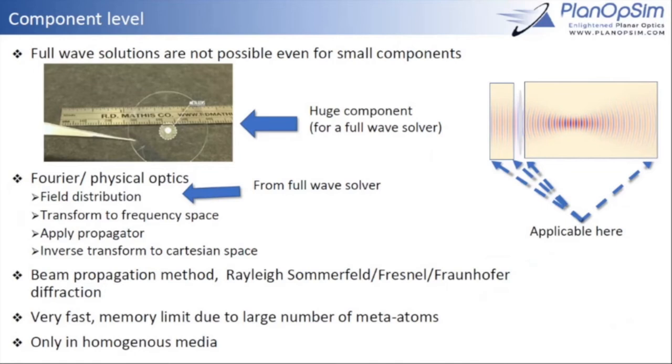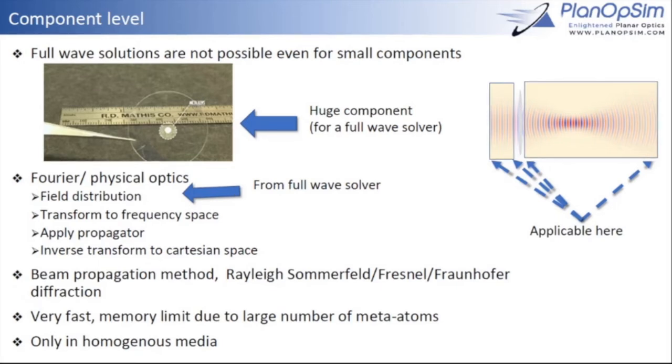We apply here the local periodic approximation, where each meta-atom is represented by its complex transmitted phase and amplitude, which gives us the field distribution, which we can then transform using Fourier transforms, propagate, and construct the field at different locations projected away from the lens. This is known under several different names, such as beam propagation method or Rayleigh-Sommerfeld diffraction. But essentially, this is all propagation, I'd like to call it that way.